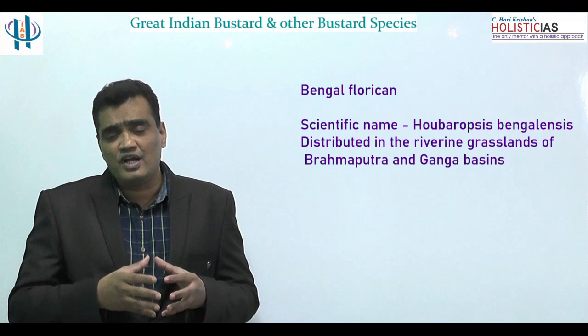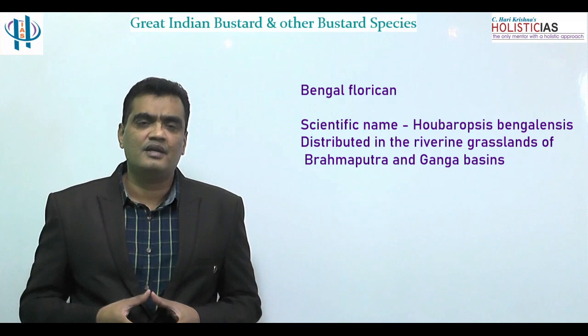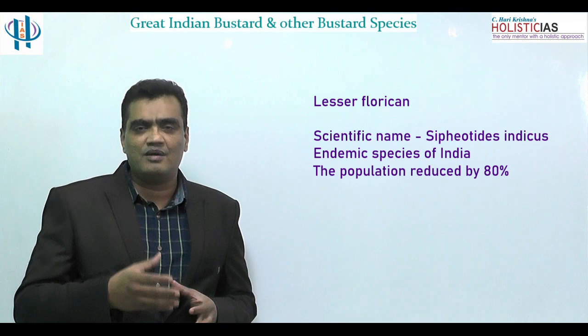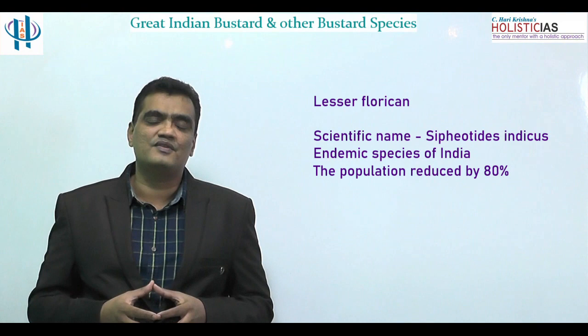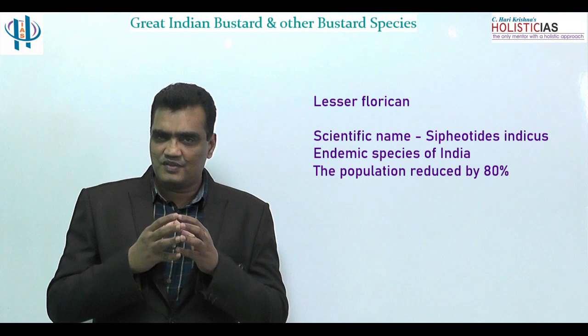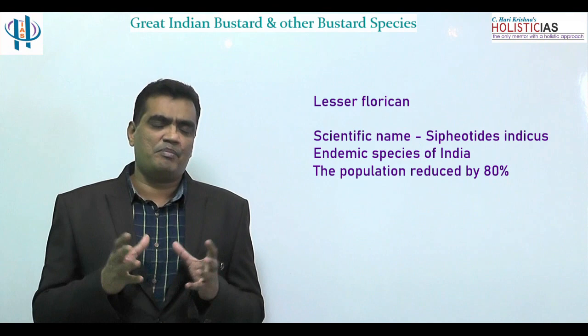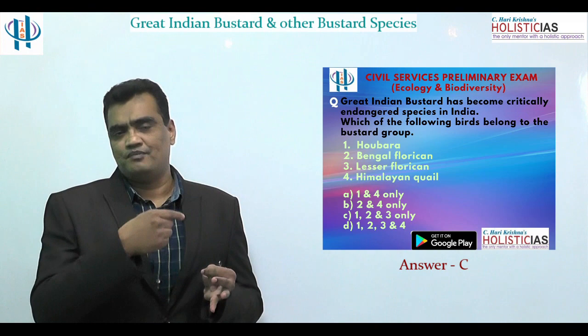The Bengal Florican is a bustard that inhabits mainly the riverine grasslands of the Brahmaputra and Ganga basin regions. It is also found in Northeast India, Vietnam, and Cambodia. The Lesser Florican's scientific name is Siphiotis indicus — the species name 'indicus' indicates that it is endemic to India. Its population has declined by around 80%, leaving only about 200-odd birds, largely due to rampant hunting over the years.